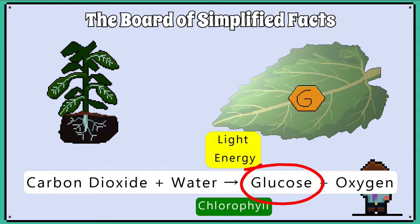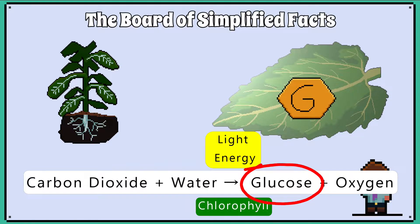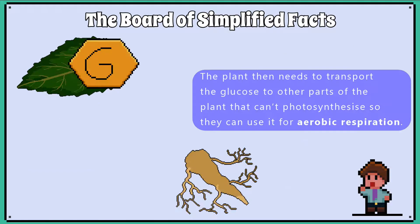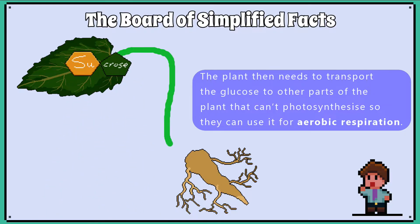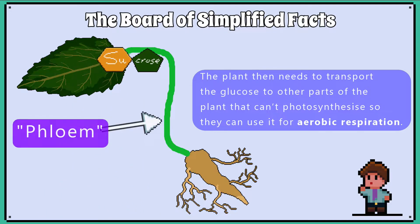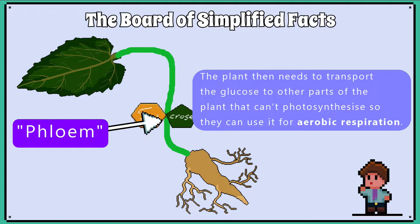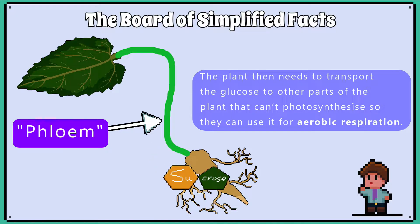The plant makes glucose in the leaves by a process called photosynthesis. The plant then needs to transport the glucose to other parts of the plant that can't photosynthesise, so they can use it for aerobic respiration.